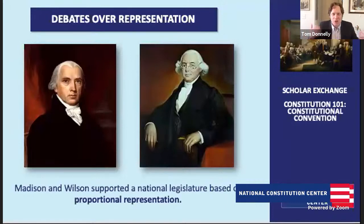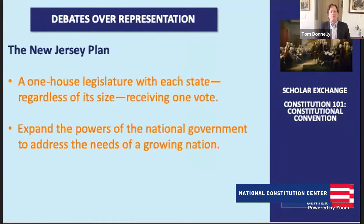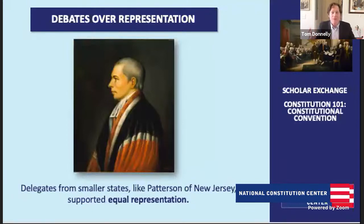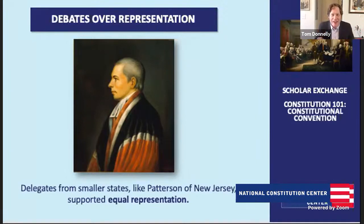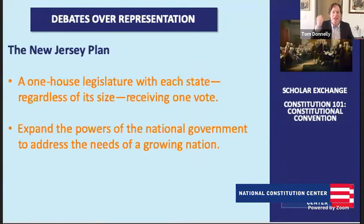You can imagine how the small states responded — not well. The alternative was the New Jersey Plan, put forward by New Jersey's William Paterson. The New Jersey Plan said we're not going to organize the legislature by population; we'll do it like the Articles of Confederation — equal state representation. Each state gets the same number of votes in the new Congress. We're not going to leave a framework with equal power and enter a more powerful government with less power.